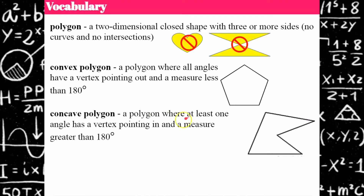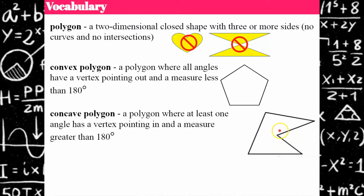A concave polygon has at least one angle with a vertex that points in, with a measure greater than 180 degrees — think 'caved in.' That inward angle is called a reflex angle. Students often mistake it for an exterior angle, but the interior angle is the reflex angle itself, greater than 180 degrees. Don't be fooled — this is the interior angle.